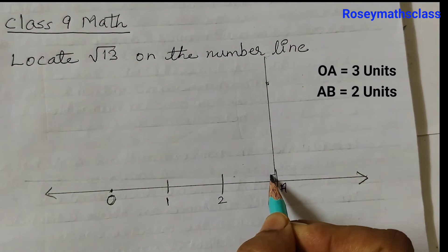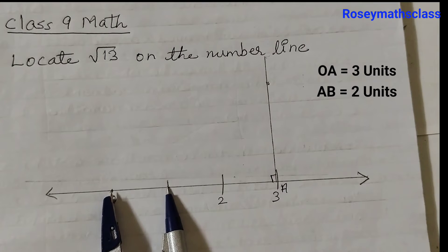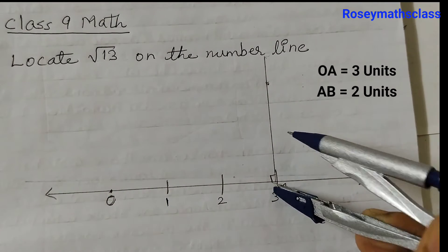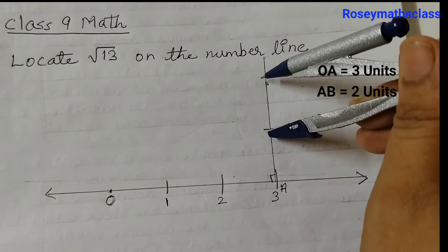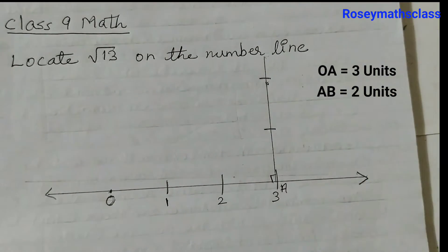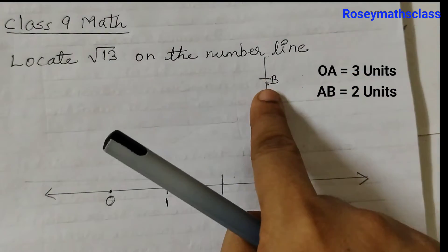This is 90 degrees. Using the same unit length from 0 to 1, we will mark 2 units: 1, 2. This is point B. Join O and B.